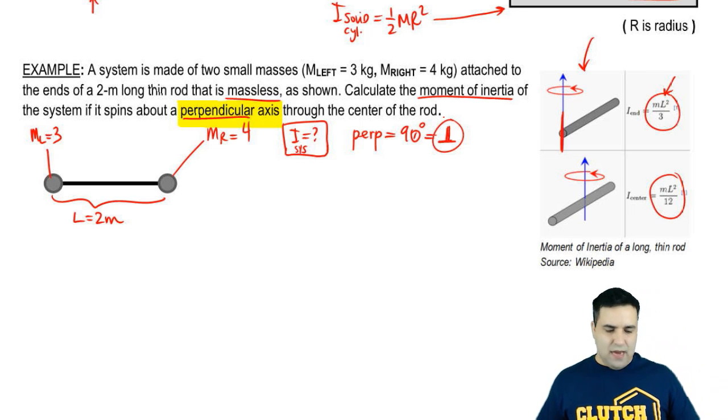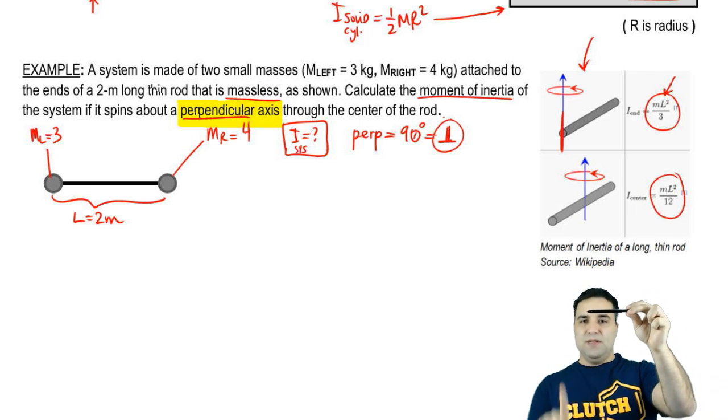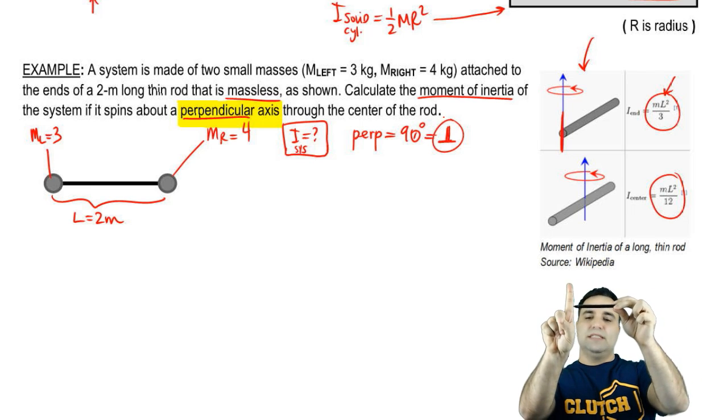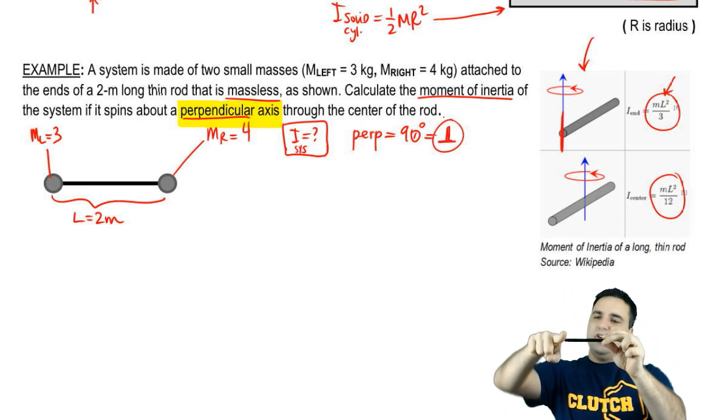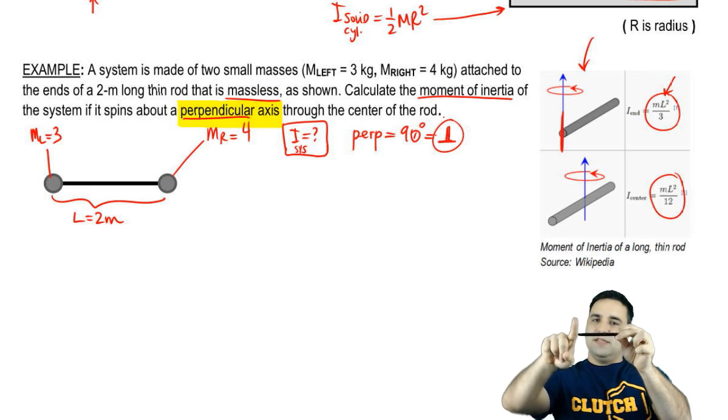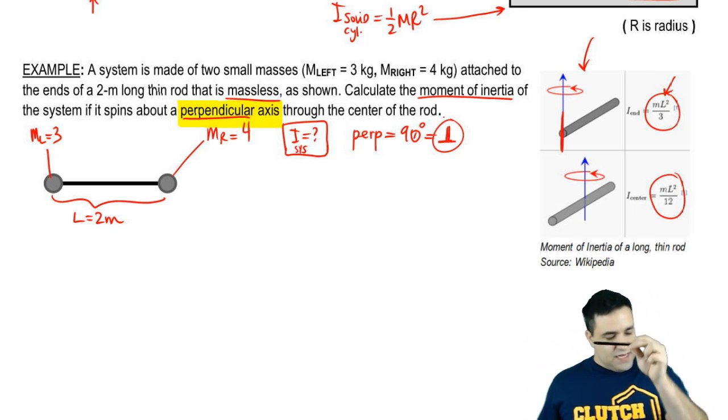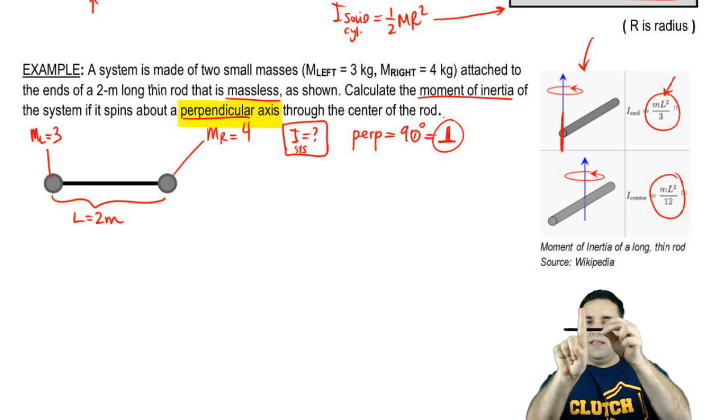So what does it mean that it's a perpendicular axis? Well, here's the rod. Perpendicular axis means that it's making 90 degrees to the rod, so it looks like this. Now, this is also perpendicular because it's also making 90 degrees, so sometimes it's hard to tell which one. You have to be careful. So it says perpendicular axis through the center of the rod, so it means it's perpendicular, makes 90 degrees, and it goes like this.